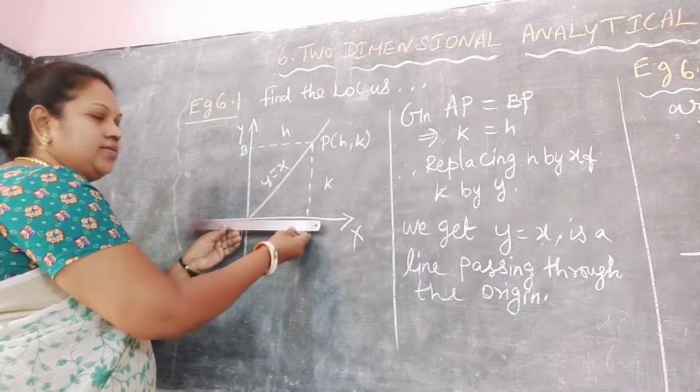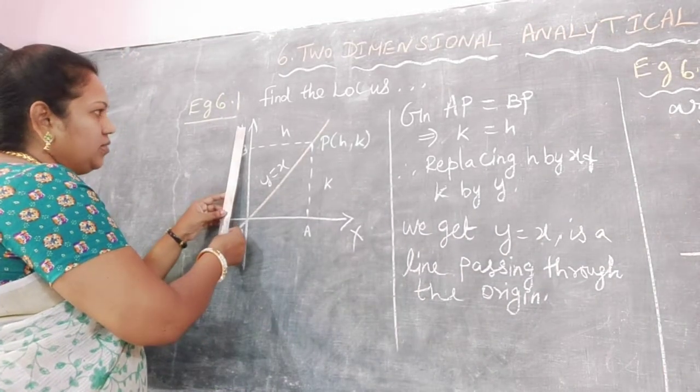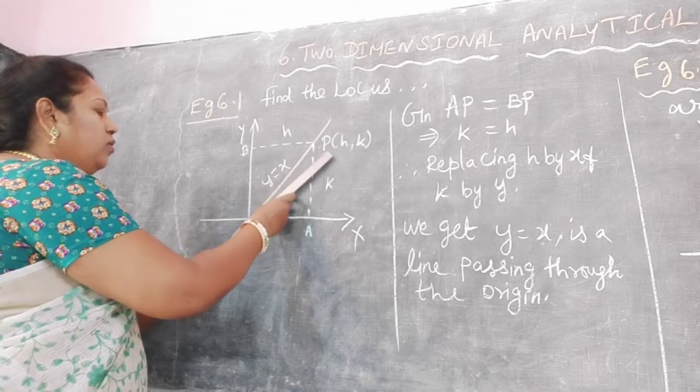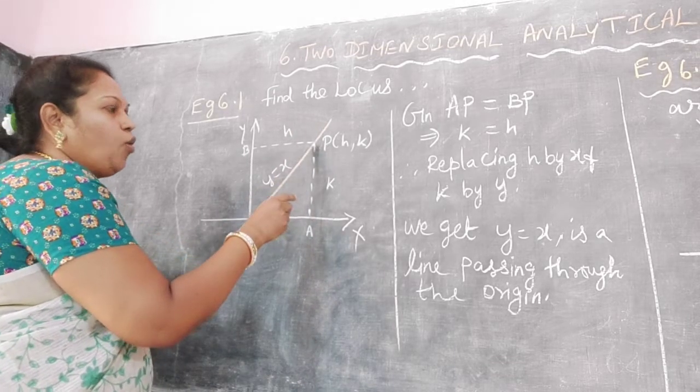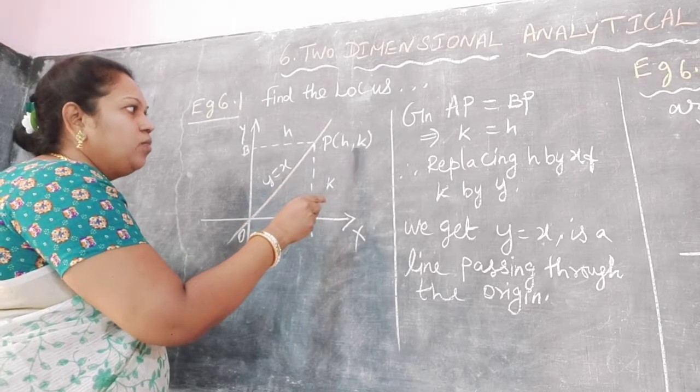Here we draw the x-axis and y-axis. Then we draw y equals x. Then place point P with coordinates h, k.